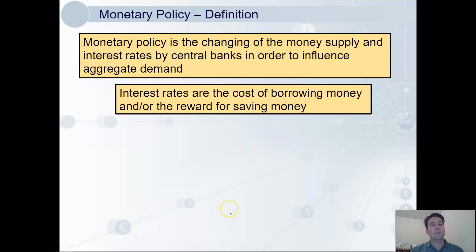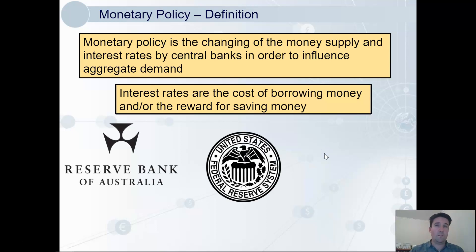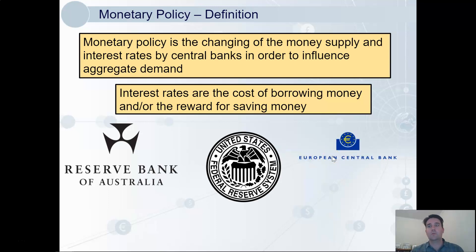Interest rates are expressed quite simply as either the cost of borrowing money or the reward for saving money. Now, what's a central bank? A central bank exists for every currency. Australia has the Reserve Bank of Australia, the US has the Federal Reserve, and the Eurozone has the European Central Bank — that's for all the countries that use the euro as their currency.